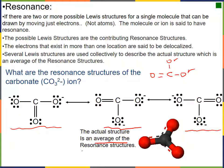The question is: which one of these actually exists? The answer, believe it or not, is none of them. What exists is in fact an average. These are called resonant structures — when we have two or more possible, valid Lewis structures for a single molecule or ion that differ only by the movement of electrons, not atoms.